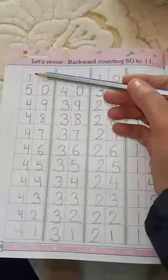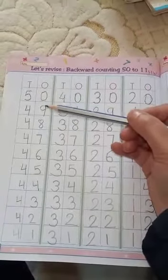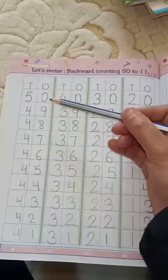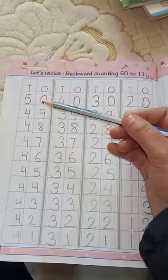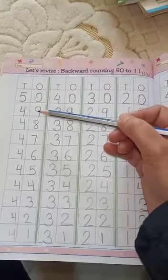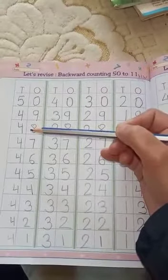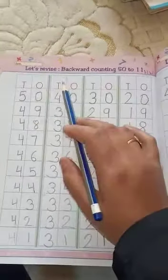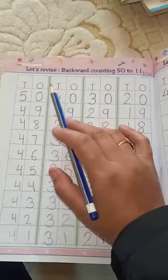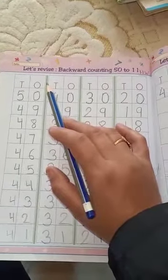So let's start. Tens ones. In backward counting, we go from bigger to smaller number. 50 is a bigger number, 49 is a smaller number. 49 is a bigger number, then 48 is a smaller number. So in backward counting, we go from bigger to smaller number.